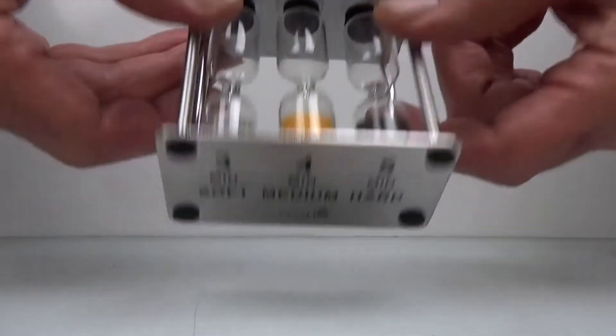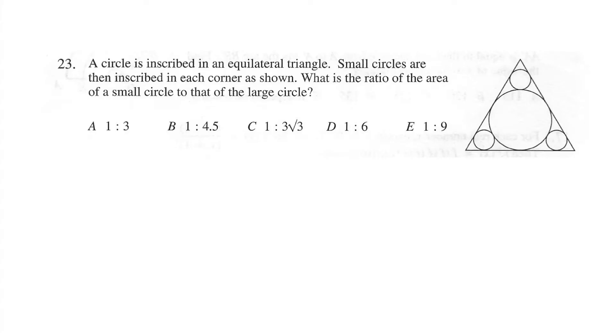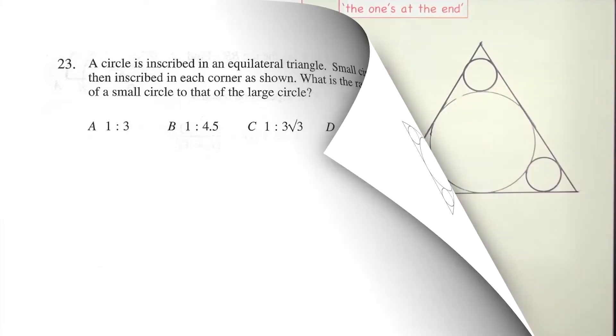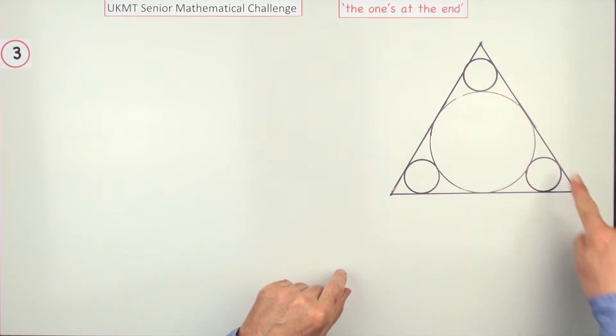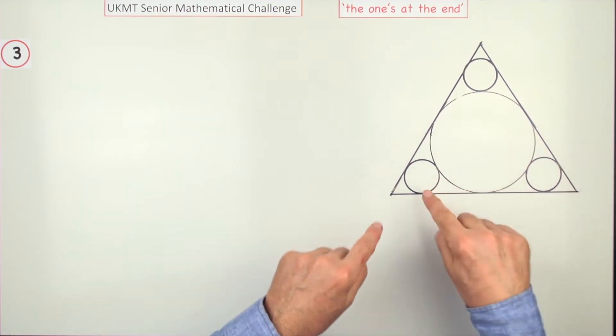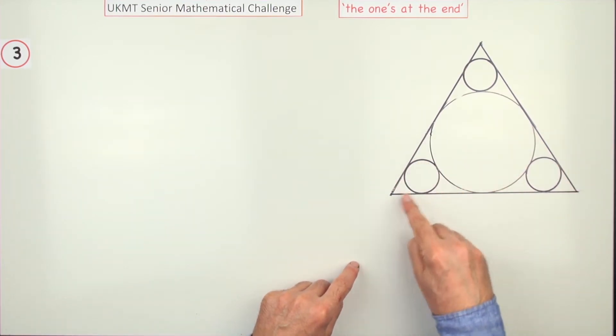So, ready, and go. Here we are then. There's the equilateral triangle with the largest possible circle inscribed in it, and then the largest possible circles inscribed into the remaining portions.